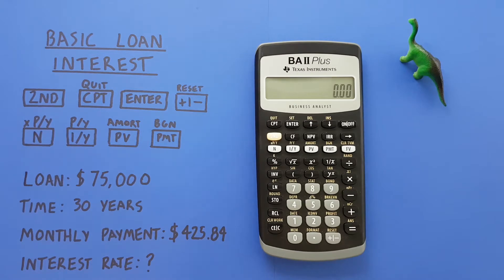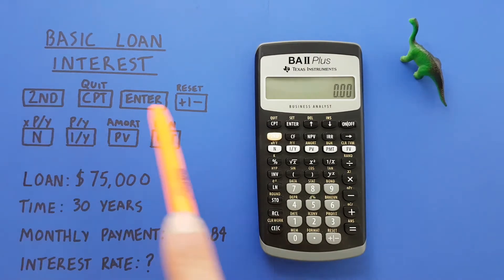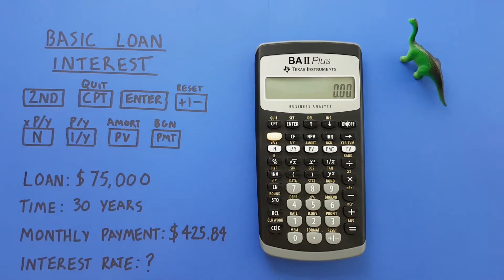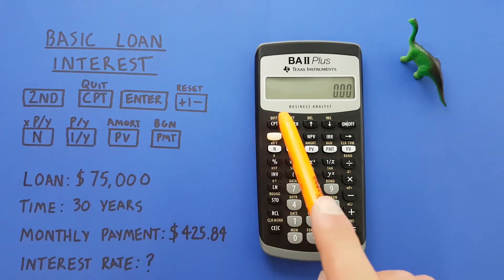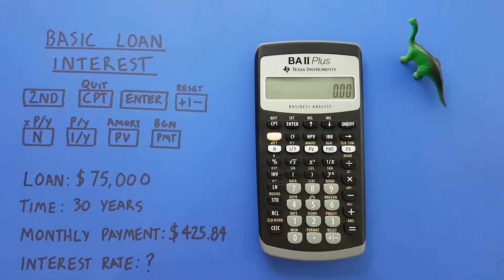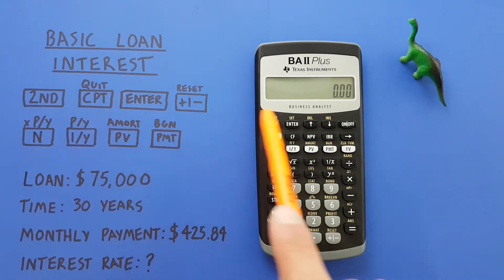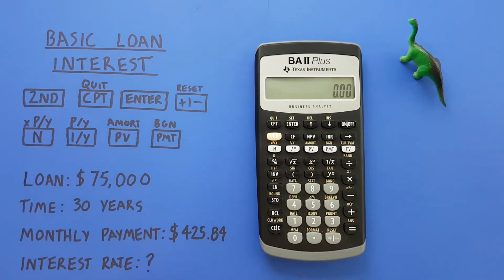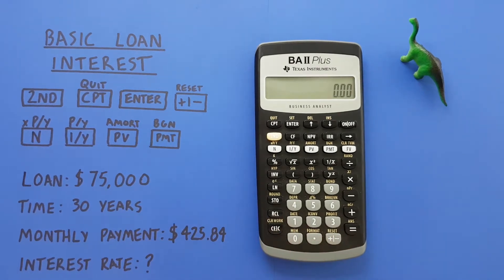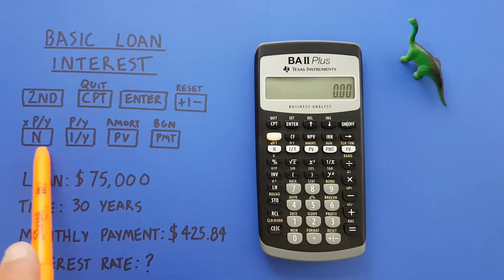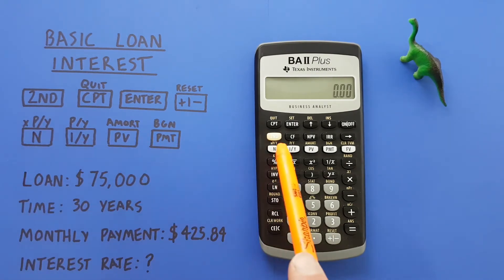To do that, we'll be using the second function key that looks like this located here, the compute key with the second function of quit located here, the enter key located here, the positive negative key located down here, as well as these financial variable keys located here in white.